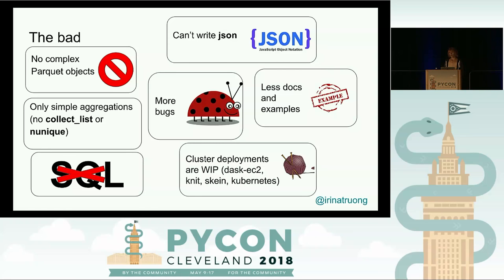The bad stuff: Dask doesn't support as many aggregation functions — for example, no collect_list or array_distinct, which are present in Spark. More bugs, less documentation and examples. Cluster deployments are kind of a work in progress — there have been several libraries to help deploy to AWS (EC2, dask-ec2, knit, skein), and now the recommended way is Kubernetes, so it's hard to keep up. Everything is still changing. Dask also doesn't support SQL — that was a big one for me, though it may not matter for everyone.